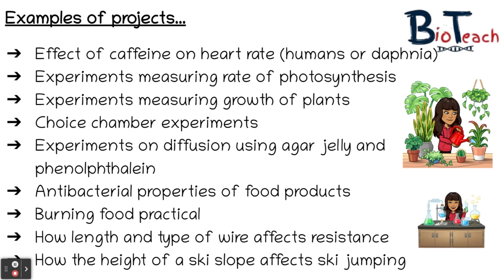Another popular experiment looks at diffusion — you can elevate a GCSE-level diffusion experiment by looking at the neutralisation reaction using acids and phenolphthalein, a pink colour indicator. A really popular one is the antibacterial properties of food products: students grow lawn cultures of E. coli and create discs of, for example, lemon juice, vinegar or bicarbonate of soda, and may also look at different cleaning products to see which is most effective. The burning food practical, where you burn a set mass of food beneath a test tube of water and measure the temperature rise, is another option — check Unit 3 of BTEC Applied Science for the methodology.